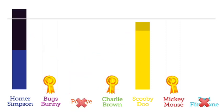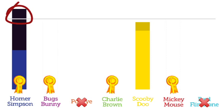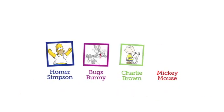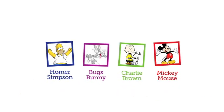By the looks of it, Popeye's voters have some crazy alliance with Homer Simpson, so it's Homer that takes the last trustee role. And it's therefore because of STV, the fairest way possible, that your new Susu student trustees are Mickey Mouse, Charlie Brown, Bugs Bunny, and Homer Simpson.